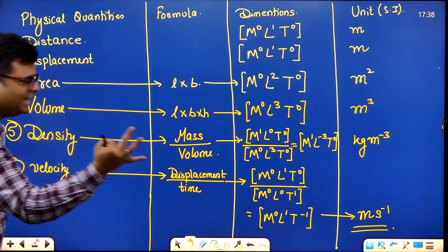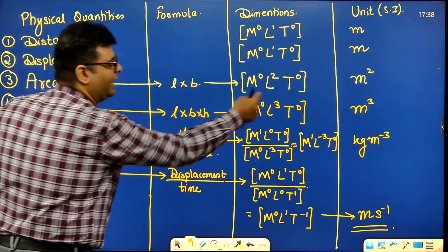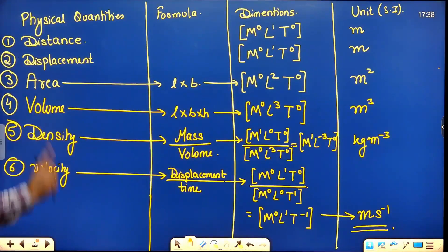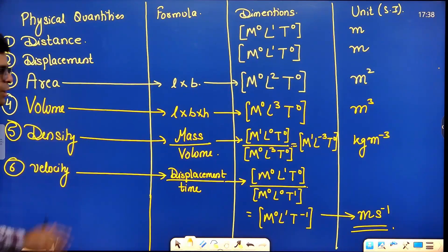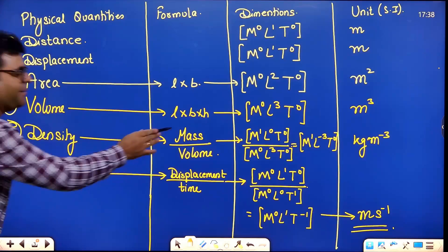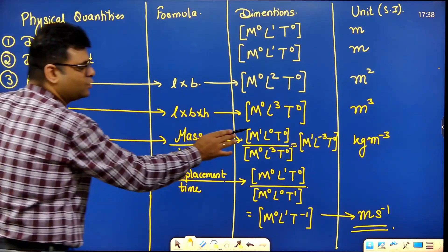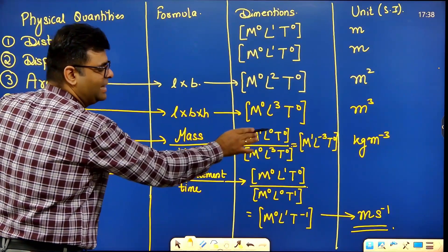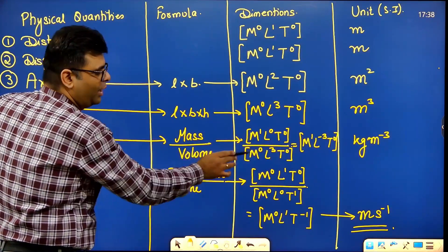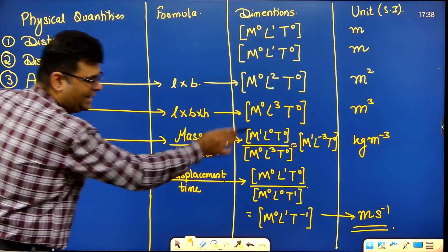Volume has three lengths — length × breadth × height — so it is M⁰L³T⁰. Density is mass upon volume: mass is M¹L⁰T⁰ and volume is M⁰L³T⁰. When you divide, same base means you subtract the powers.